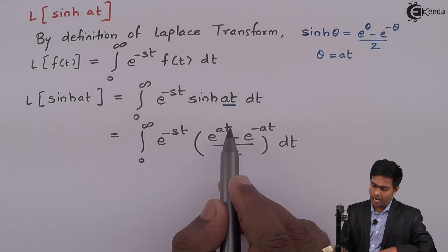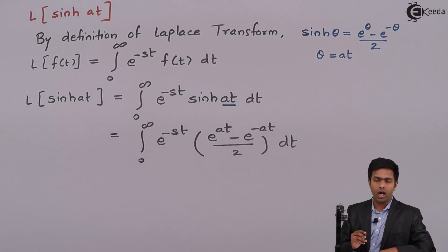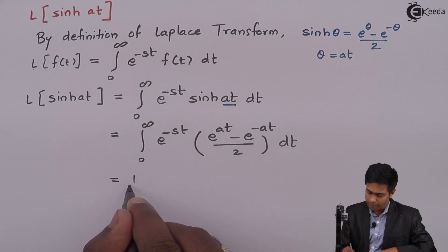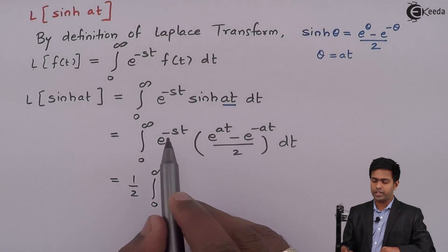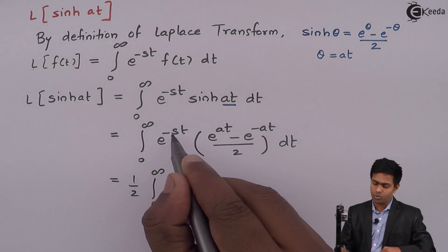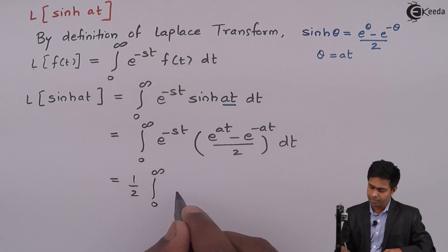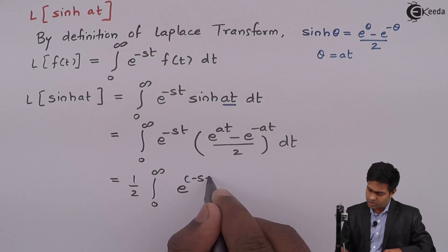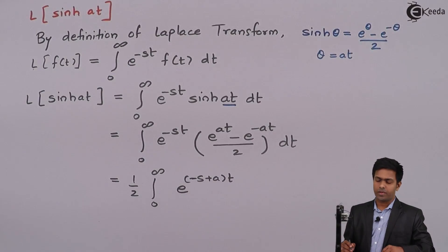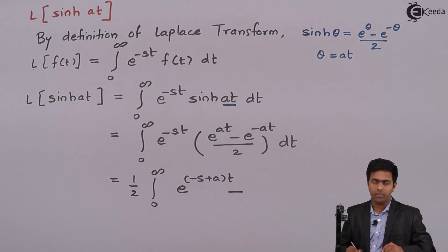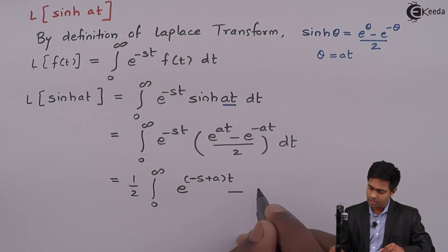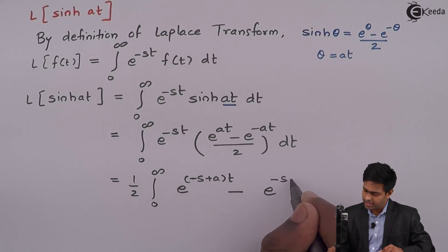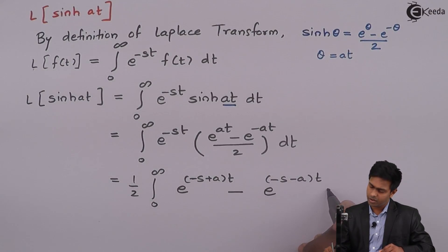Taking the constant 1/2 outside the integration, we get one-half times the integral from 0 to infinity. Multiplying e raised to minus st into the bracket: e raised to minus st times e raised to at becomes e raised to minus (s minus a)t, since we are adding the exponents. The middle sign is negative, and e raised to minus st times e raised to minus at gives e raised to minus (s plus a)t.